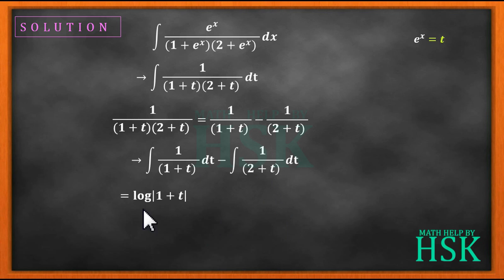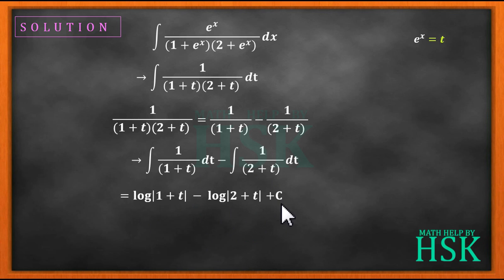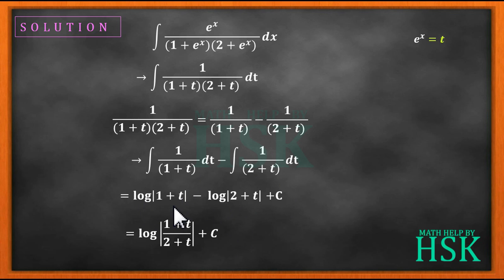We get log(1 + t) − log(2 + t) + C. Applying the logarithm property log m − log n = log(m/n), this becomes log((1 + t)/(2 + t)) + C.